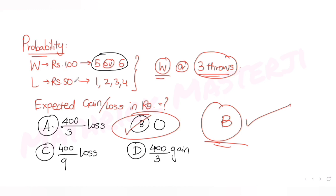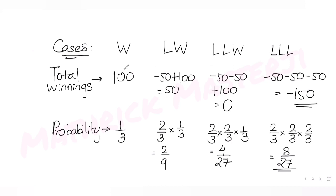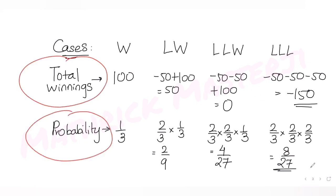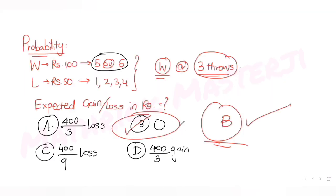So option B is the correct answer. To summarize: we identified all four cases based on the conditions, calculated the net earnings for each case, found the probability for each case, and applied the mean formula — summation of winnings times probability — which gave zero, matching option B. I'll see you tomorrow with more JEE Mains questions. Please like, subscribe, and share these videos with friends preparing for JEE. Thank you!